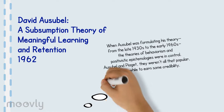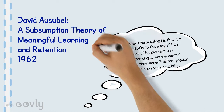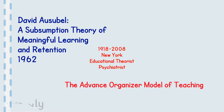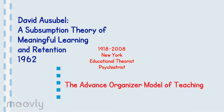David Ausubel, A Subsumption Theory of Meaningful Learning and Retention, 1962. When Ausubel was formulating his theory from the late 1930s to the early 1960s, the theories of behaviorism and positivistic epistemologies were in control. Ausubel and Piaget weren't all that popular — it took a while to earn some credibility. David Ausubel is a New York psychiatrist and educational theorist who lived from 1918 to 2008, and he is most famous for the advanced organizer model of teaching.